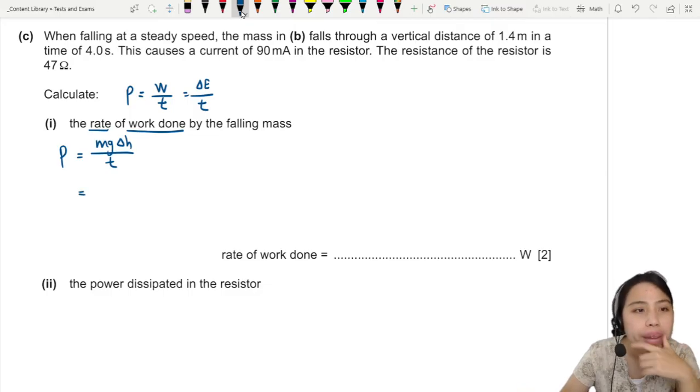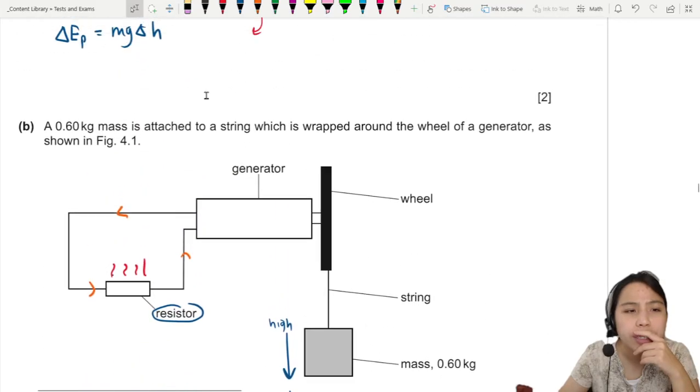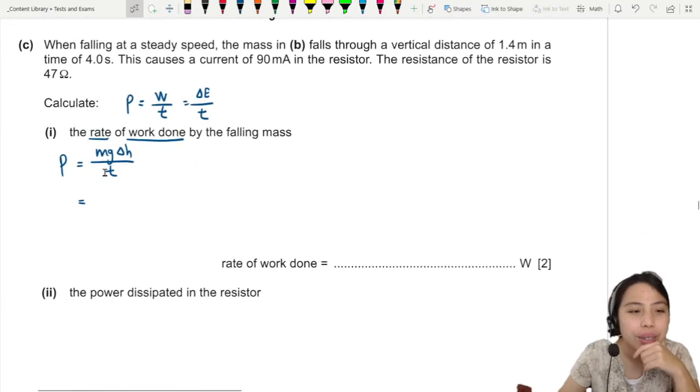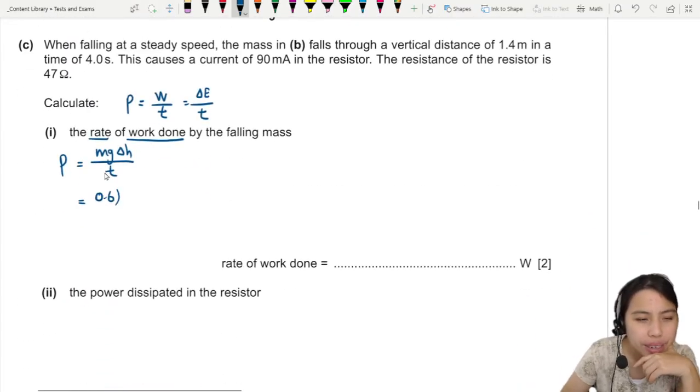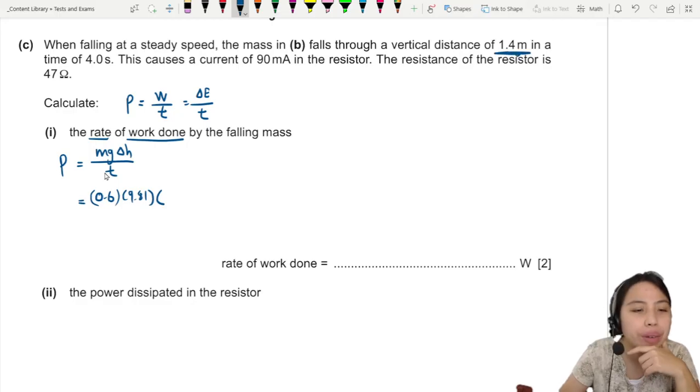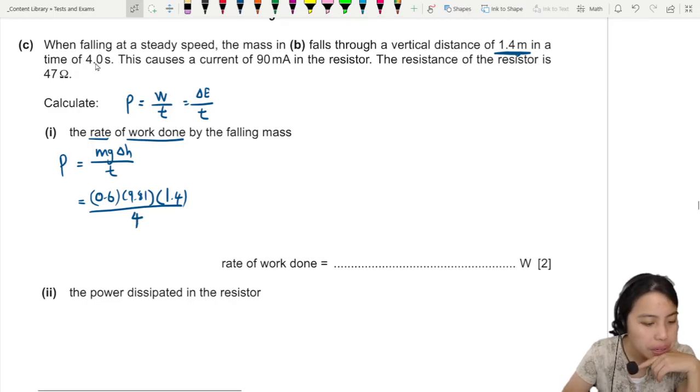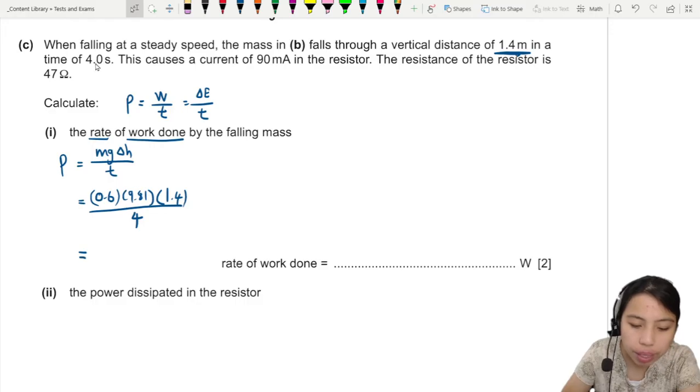So we're going to look at power, which is mg change in height over t. So let's go mass. Did they give us the mass? They did, right up here. 0.6 kg mass. So let's go 0.6, 9.81. Height? This is 1.4 meters. Okay, good. Time? In a time of 4 seconds. So find the average power over the 4 seconds. Okay, so this should give us about 2.06 watts, or you could write as 2.1 watts.